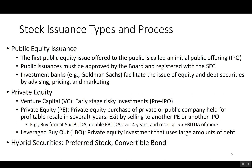Let's talk about stock issuance. When a company is initially private — owned by a partnership or a few people — at some point it wants a big expansion plan and can't finance it with just local investors. So the company goes public: it has an initial public offering (IPO). The shares become publicly traded on the New York Stock Exchange or NASDAQ, and anyone can buy shares and become an owner. Investment banks like Goldman Sachs help facilitate that issuance of equity and debt securities by advising on pricing and marketing, usually for a hefty fee.